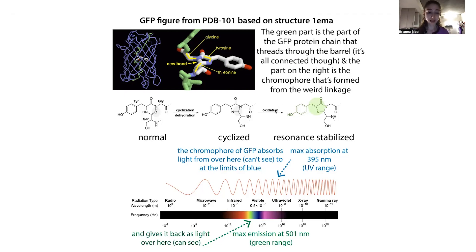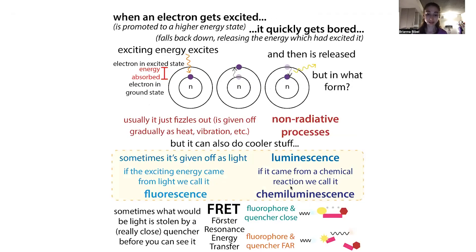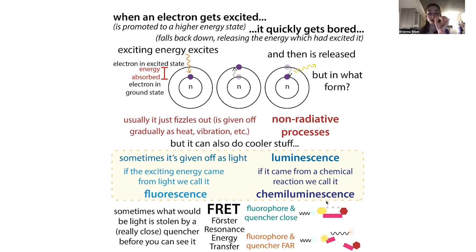You can also use FRET — Förster Resonance Energy Transfer — where instead of being released as light, the energy from an excited fluorophore can be transferred to a nearby acceptor molecule, a quencher, before the light is emitted. If the fluorophore and quencher are separated, you see the light; if they're close together, the fluorescence is quenched. This principle is used in qPCR probes and to detect molecular interactions inside cells.